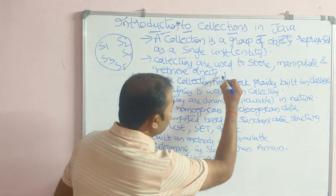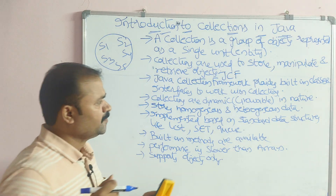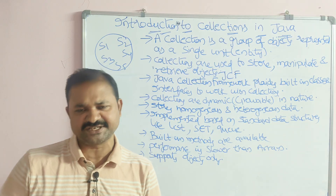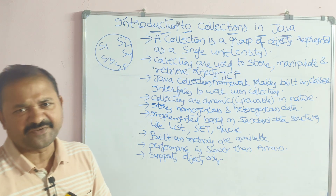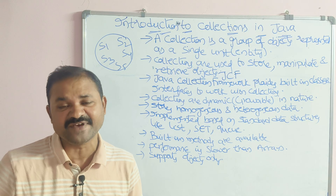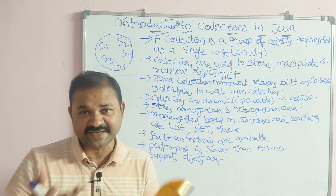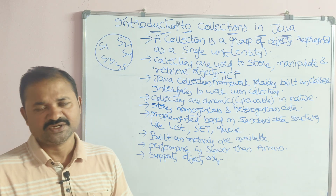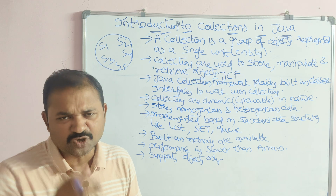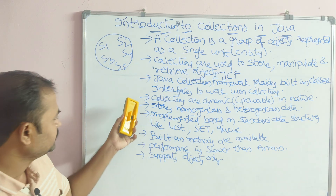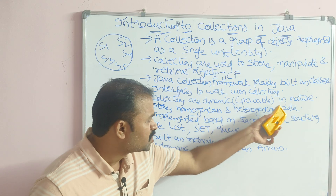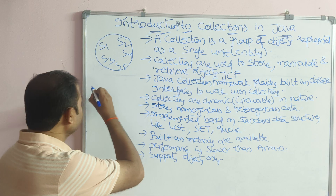The Java Collection Framework, or JCF, provides built-in classes and interfaces to work with collections. It mainly contains predefined classes and interfaces with built-in methods, so we can work with collections using those methods. Collections are dynamic, meaning they are growable in nature.